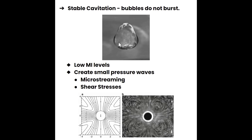While unlikely, the shear stresses can cause damage to the cells. In our example here, we can see a bubble that is oscillating. It is not bursting. This is stable cavitation. It is increasing and decreasing in size. It's not going to rupture.